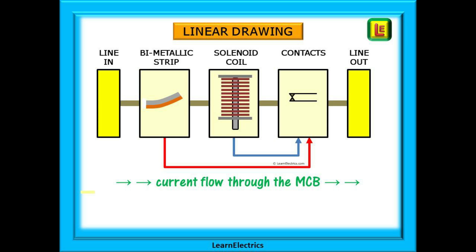From the solenoid the current flows through the closed contacts and to the line out terminal from where it then travels along the circuit wires to the attached appliances, the sockets or whatever.